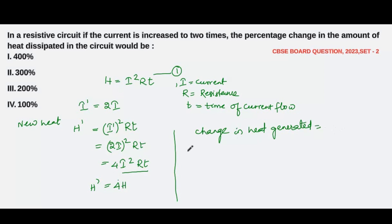So the change in heat generated would be 4H minus H, which is 3H. Now we have to find out the percentage change in heat, so percentage change in heat dissipated would be given by the formula: